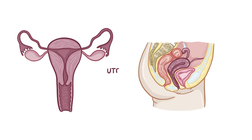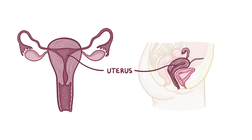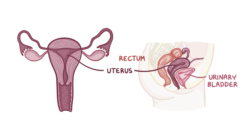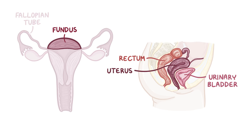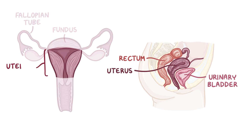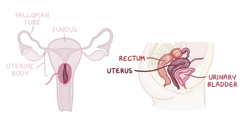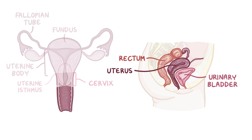The uterus is a hollow organ that sits behind the urinary bladder and in front of the rectum. The top of the uterus, above the opening of the fallopian tubes, is called the fundus, and the region below the openings is called the uterine body. The uterus tapers down into the uterine isthmus and finally the cervix, which protrudes into the vagina.